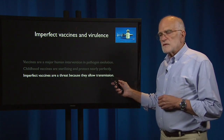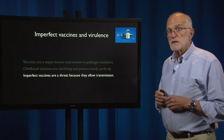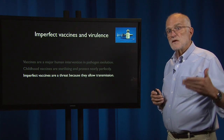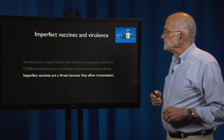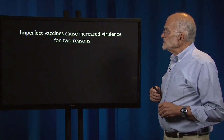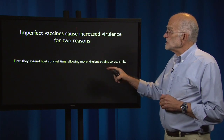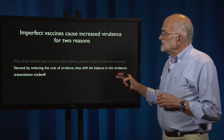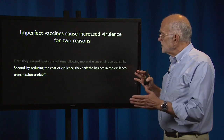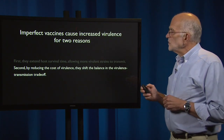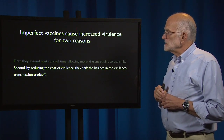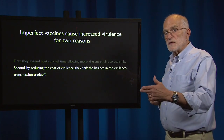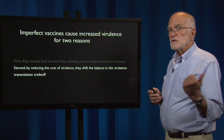Imperfect vaccines are different — they are a threat because they allow transmission. Not everyone who is vaccinated clears the pathogen, and so in some cases can transmit it to another person. They cause increased virulence for two reasons: first, they extend host survival time, which allows more virulent strains to transmit; and second, by reducing the cost of virulence, they shift the balance in the virulence-transmission trade-off. The vaccine allows strains to survive and continue to transmit that in an unvaccinated person would have killed that person too quickly.